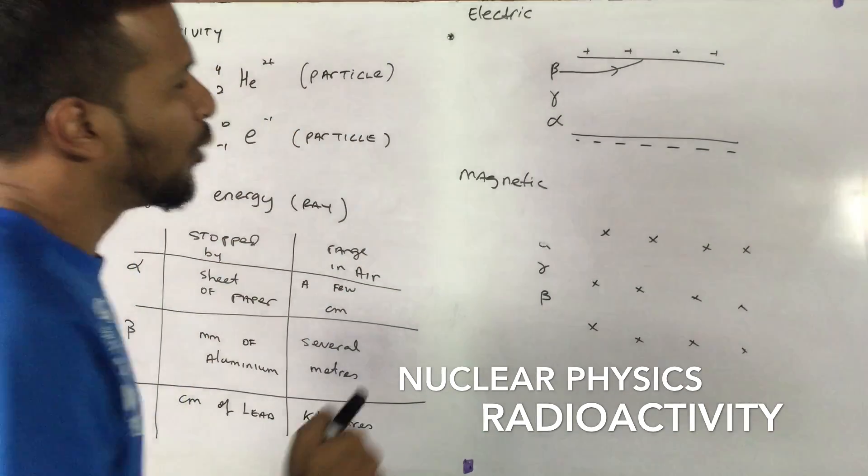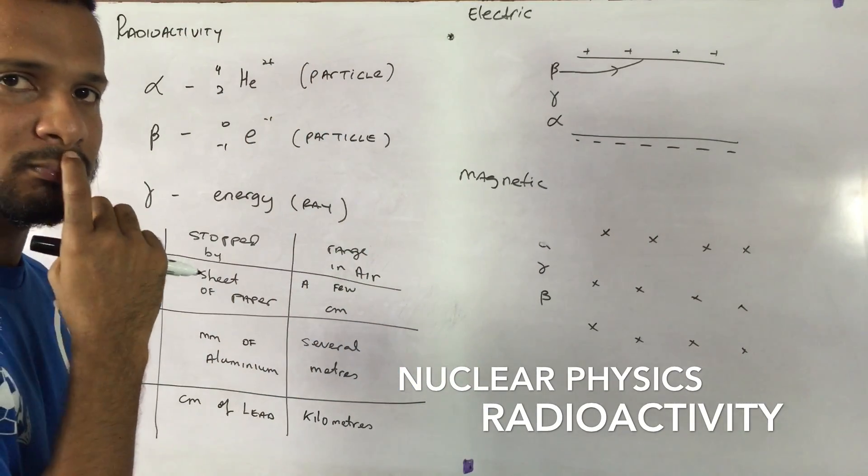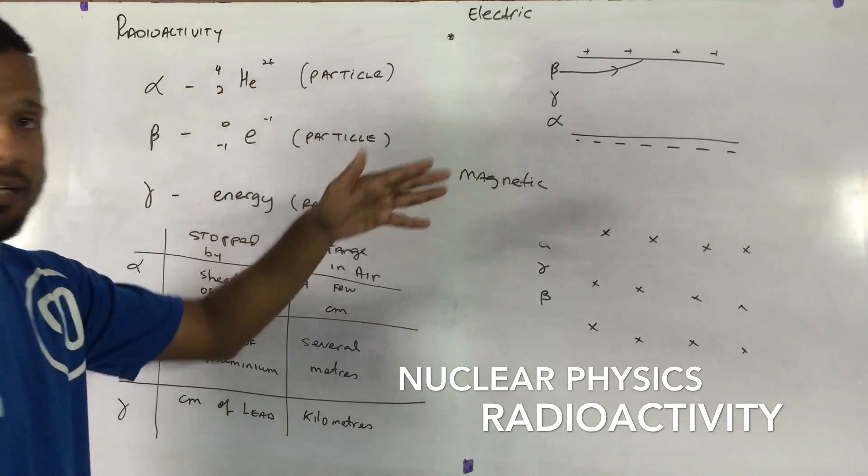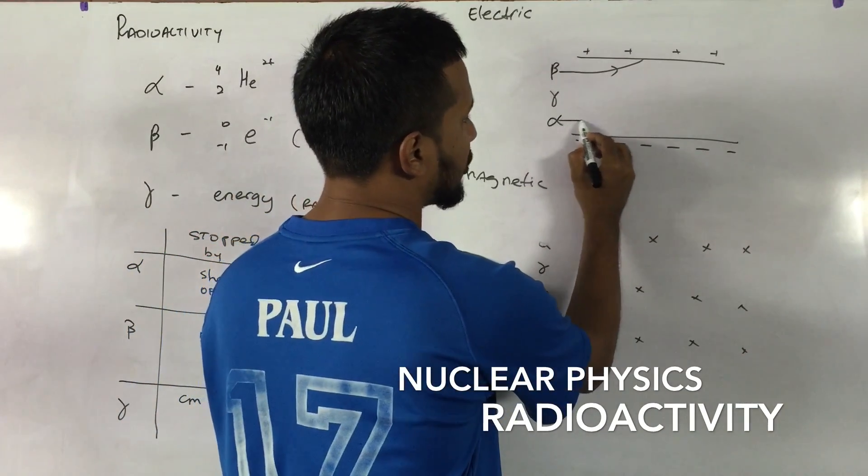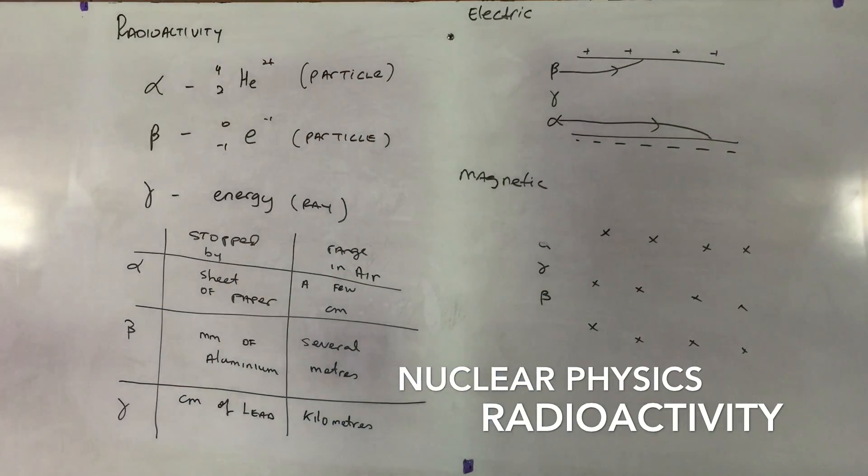And will it travel the same distance or will it go further? Very good. It will go further. Why? Because the alpha particle is heavier. So the alpha particle will travel a little bit further before it's pulled in by the electric field.